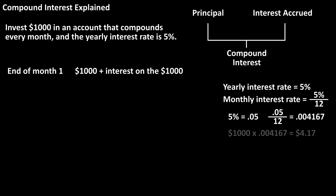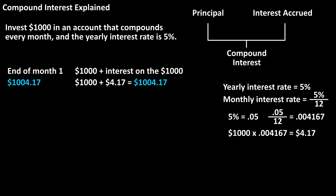Next, we multiply this monthly interest rate by the $1,000 investment, which equals $4.17 rounded off. So at the end of one month, after the interest payment, the account will have the initial investment of $1,000 plus the $4.17 interest payment, so $1,004.17 will be in the account.